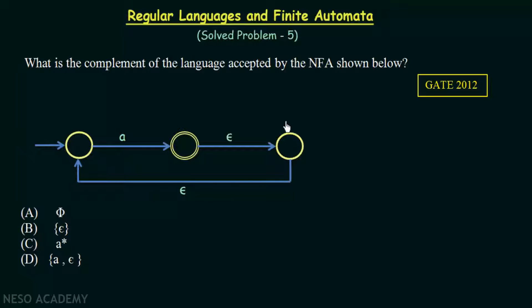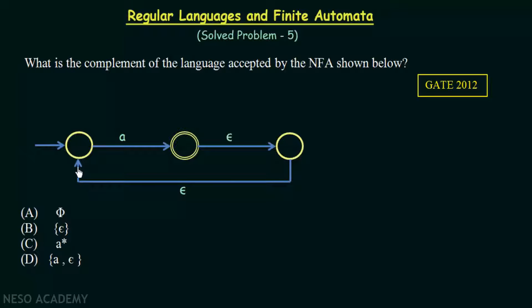We have an NFA given here and the question is what is the complement of the language accepted by this NFA. Complement means the opposite of what it is doing. The starting state has an input symbol A which goes to the final state. From the final state, if we get epsilon (the empty symbol), it goes to the next state, and from that state epsilon takes us back to the starting state.